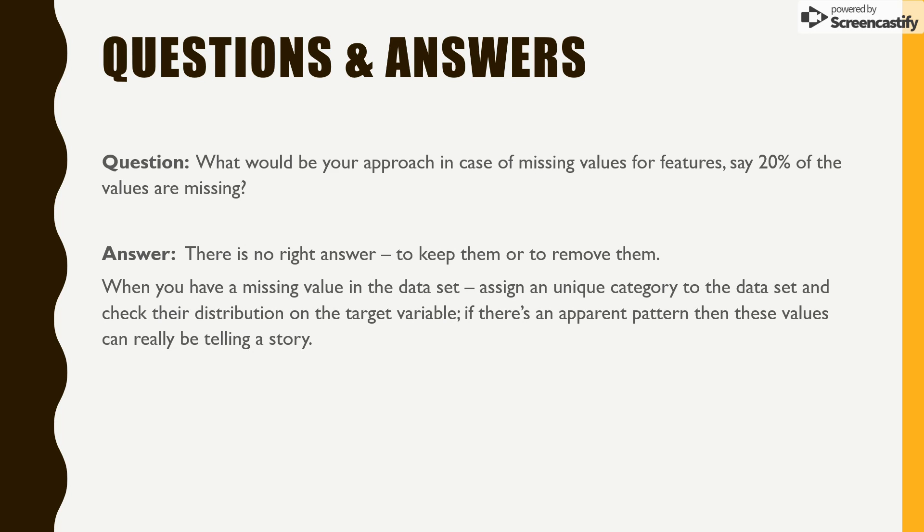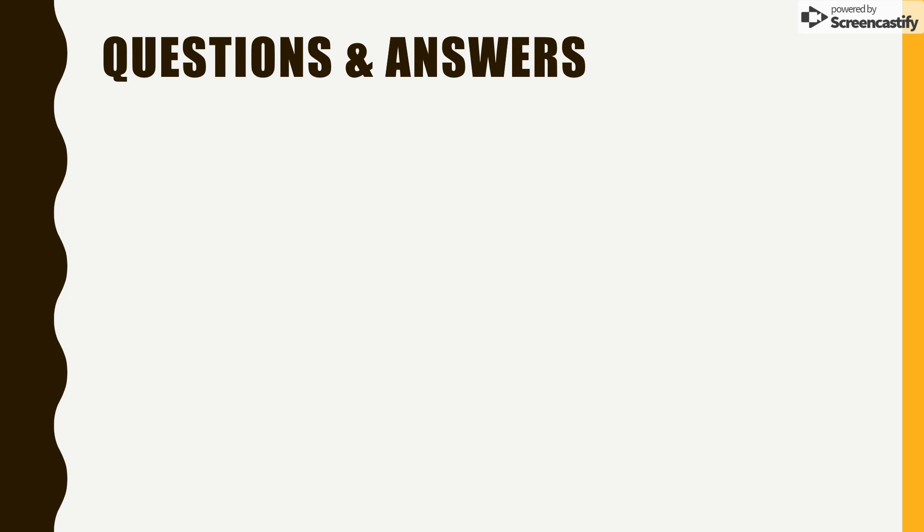assign a unique category. For example, assign a category saying that any missing values would be category this. And then see how the target variable is distributed on that missing category. If there is a link or if there is an apparent pattern, then obviously you cannot afford to remove the missing values.